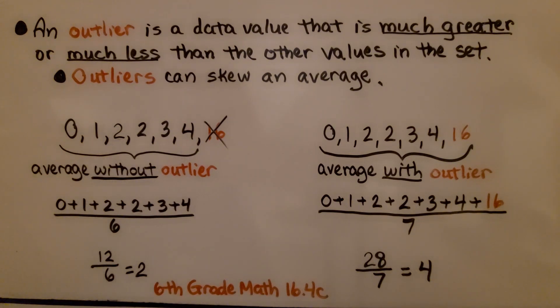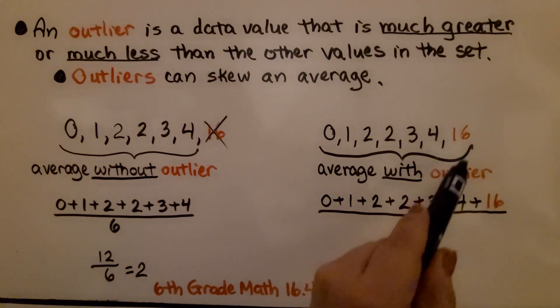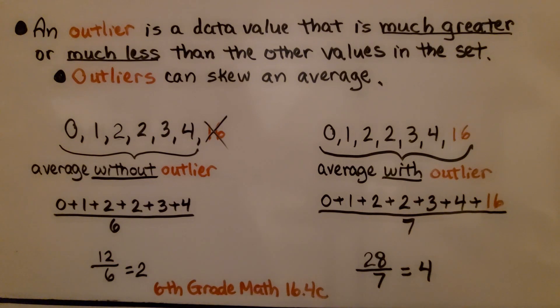Do you see how without the outlier, our average was two, but with the outlier, our average was four? That outlier skewed the average and made it more because it was so different than the other data values.